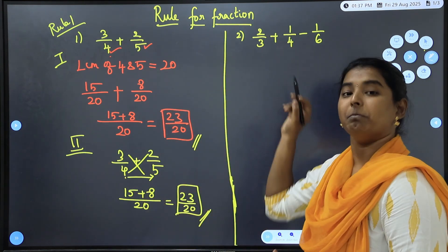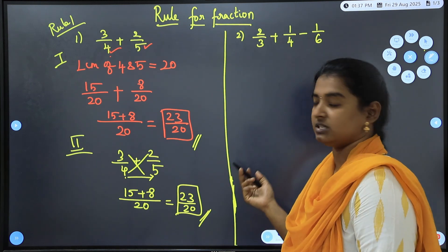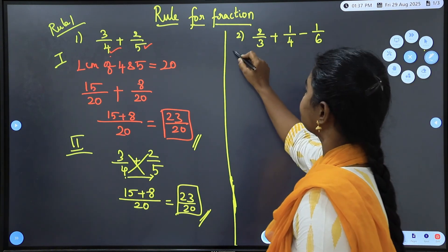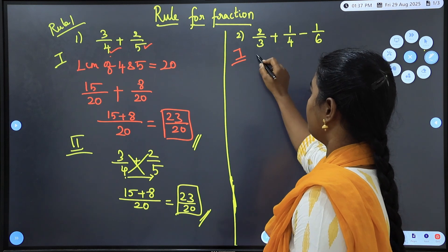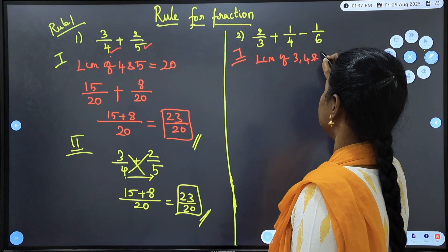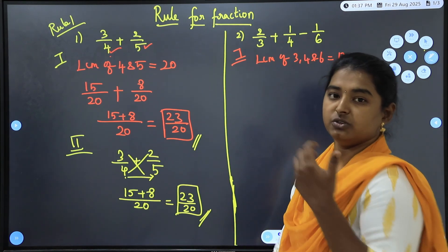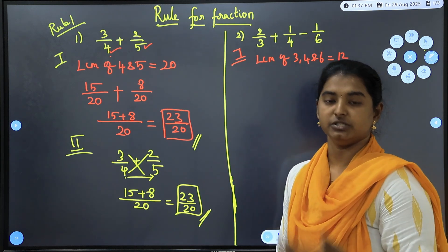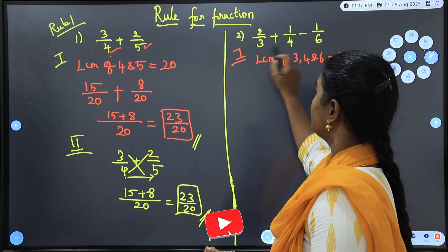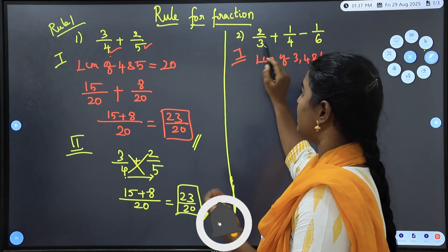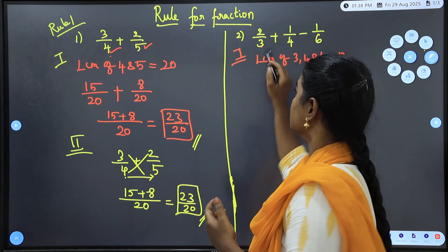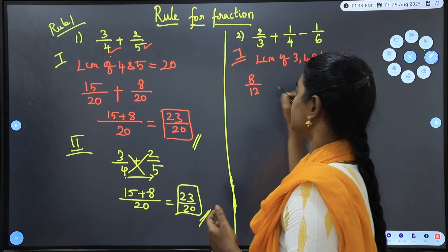Second question: 2/3 + 1/4 − 1/6. You can solve with both addition and subtraction signs. Using the LCM method, find the LCM of 3, 4, and 6, which is 12. For 2/3: multiply by 4, giving 8/12.